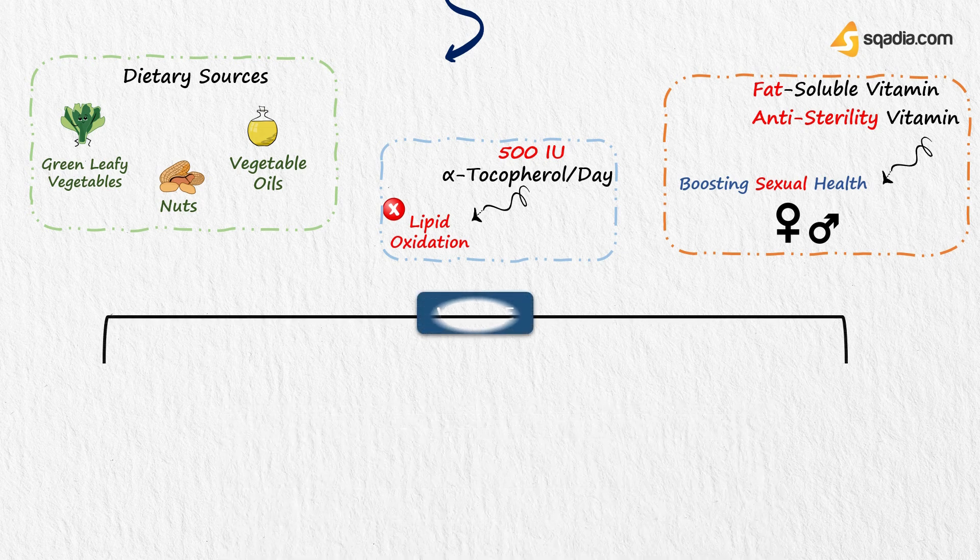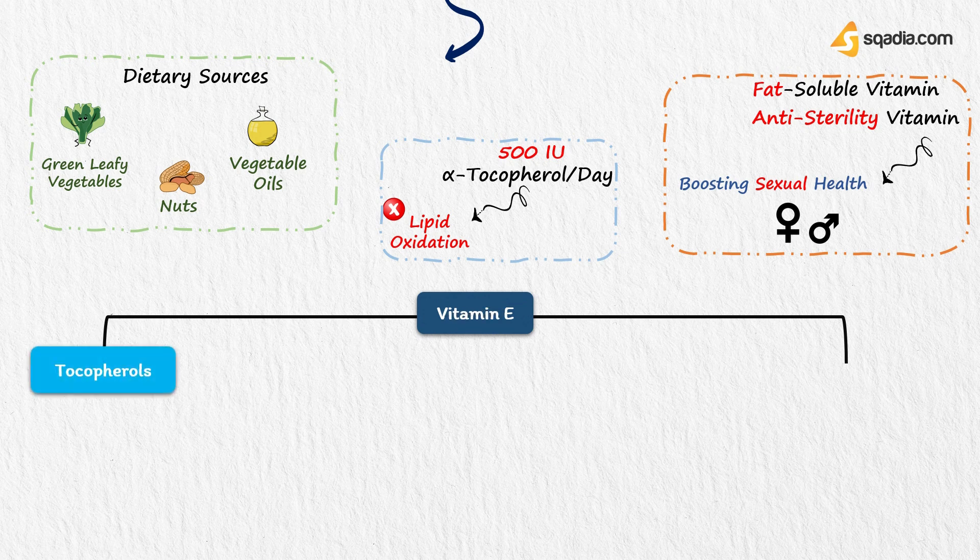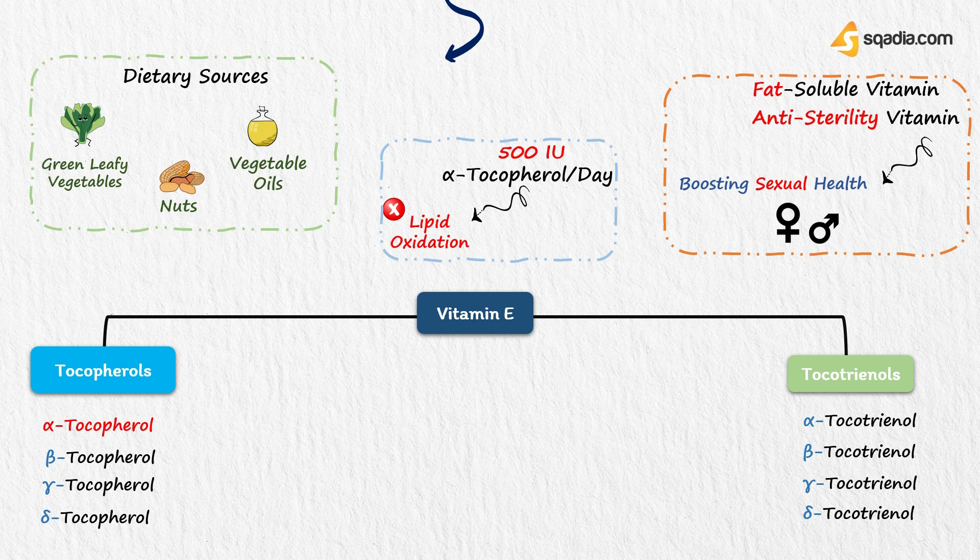Vitamin E includes different groups of fat-soluble compounds: tocopherols and tocotrienols. Tocopherols include alpha-tocopherol, beta-tocopherol, gamma-tocopherol, and delta-tocopherol, while tocotrienols also include alpha, beta, gamma, and delta forms.